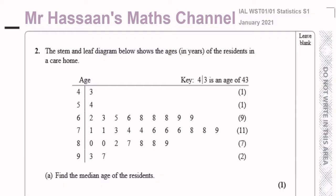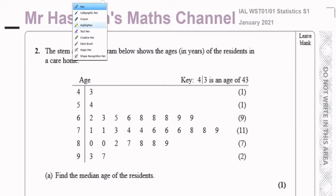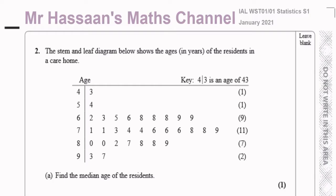This question is about a stem and leaf diagram which shows the ages in years of the residents in a care home. The key is given as four being the stem and three being the leaf, meaning 43. So the stems are tens and the leaves are units. For example, this particular number here refers to 74.